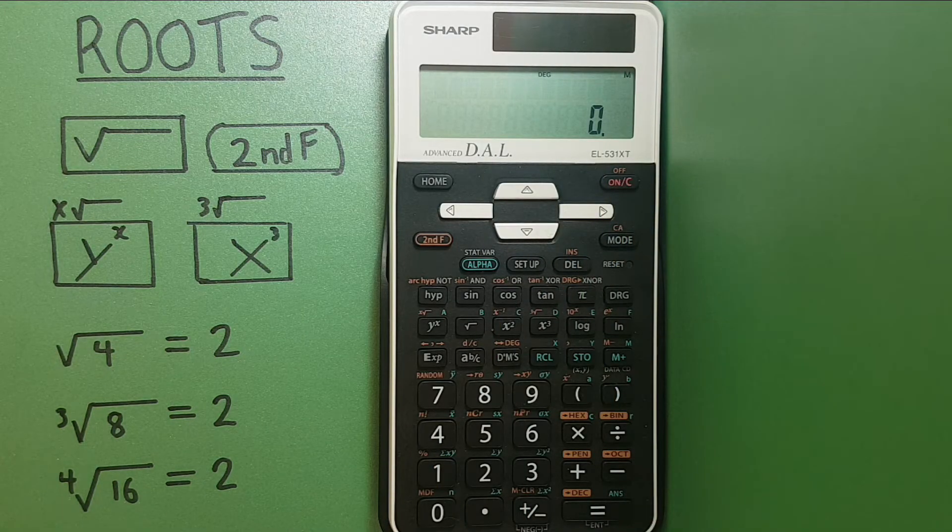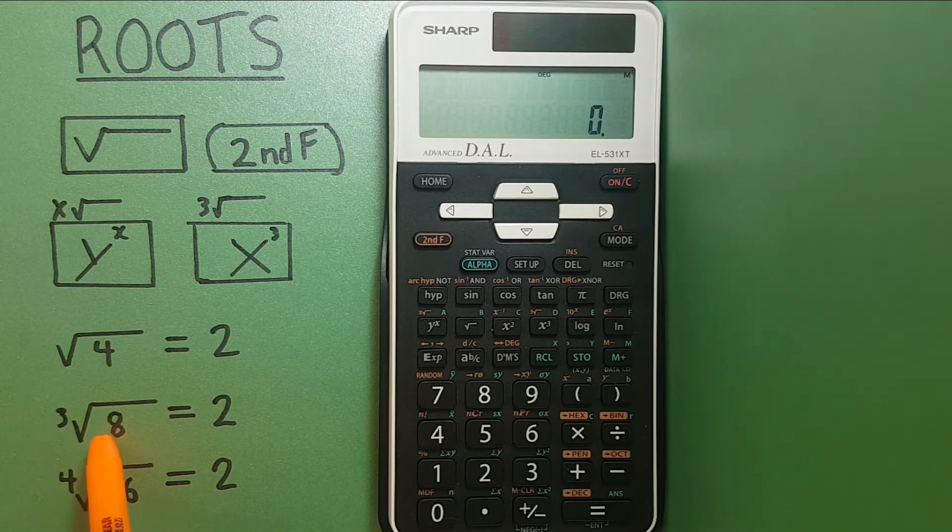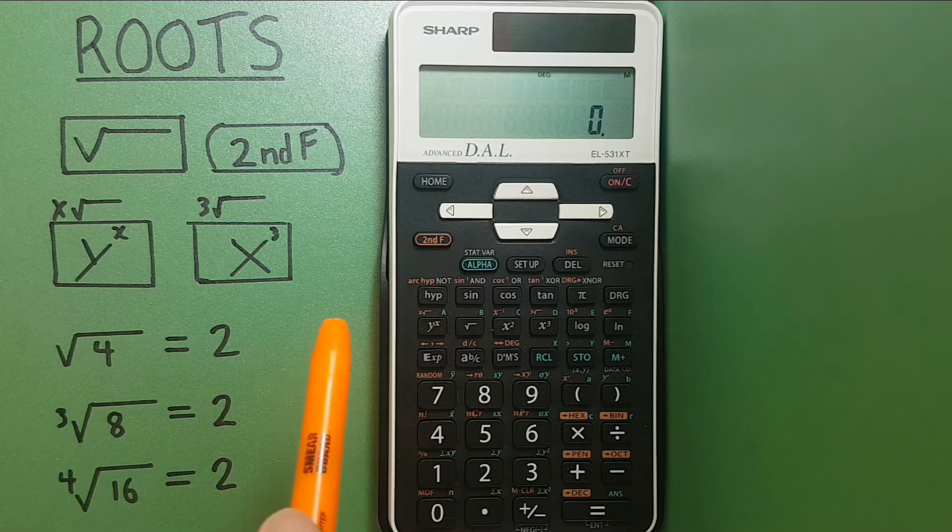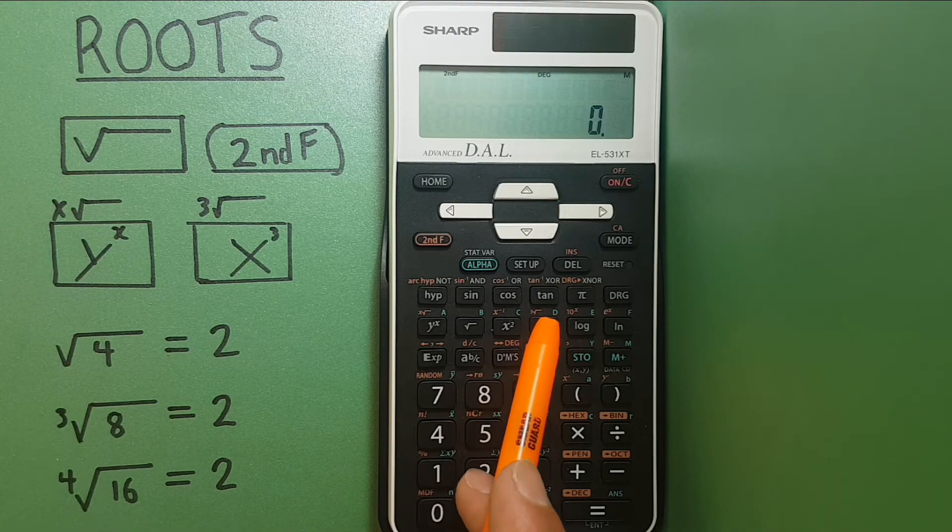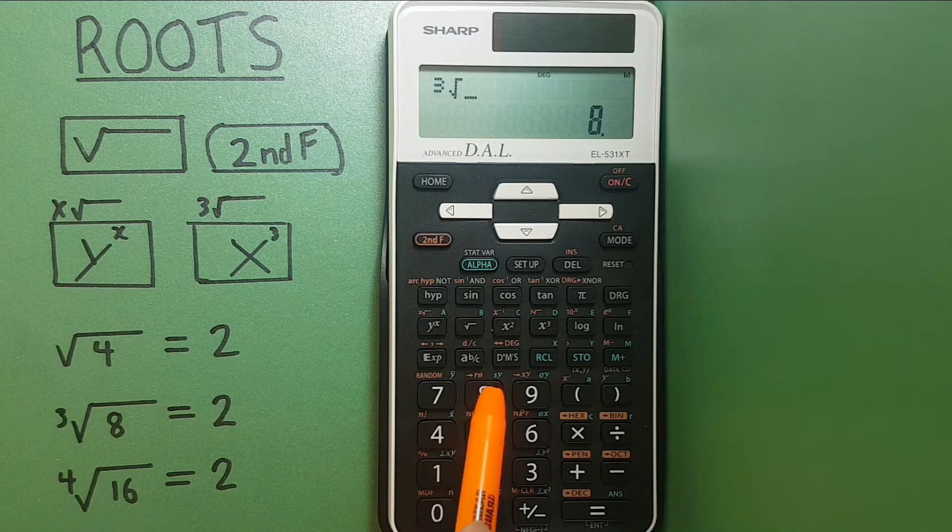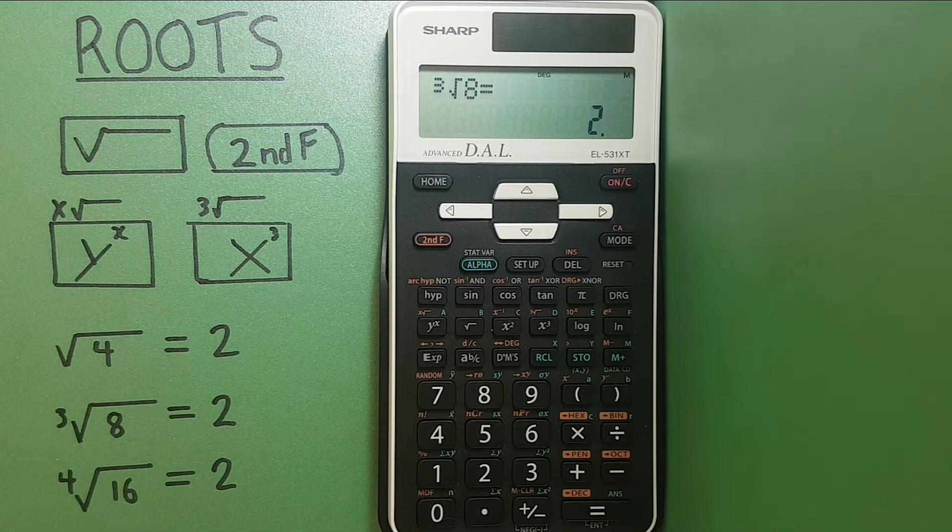How about a cube root? Well this time we know that 2 times 2 times 2 is equal to 8, so the cube root of 8 should equal 2. This time we go second function, cube root, see that in the top layer there, 8 equals, and we get 2, which is correct.